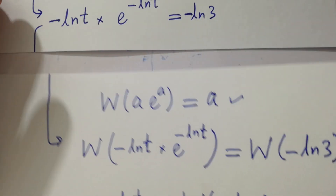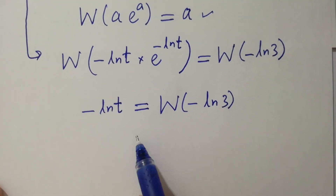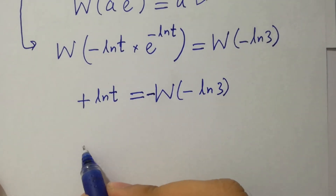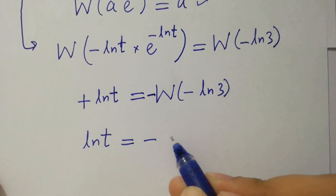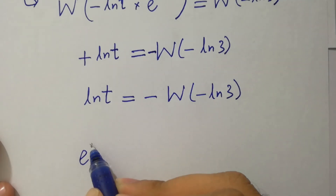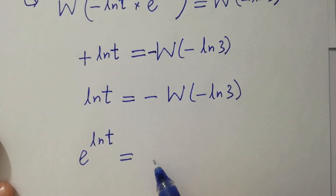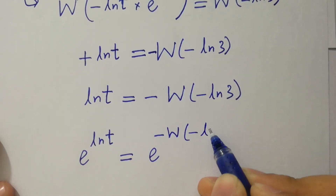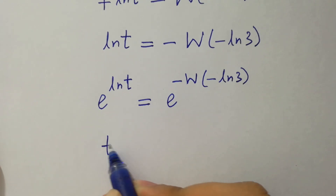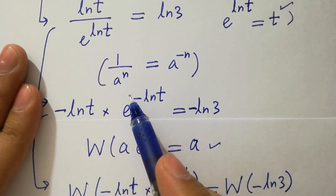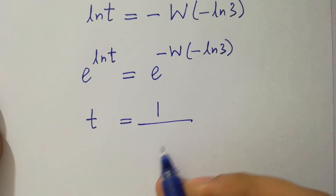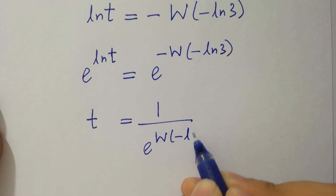In the next step, multiply by minus on both sides. To find t: ln(t) equals minus W(minus ln(3)). Raise e on both sides: e to the power ln(t) equals e to the power minus W(minus ln(3)). Since e to the power ln(t) equals t, we get t equals 1 over e to the power W(minus ln(3)).